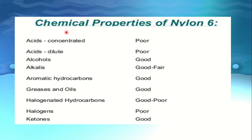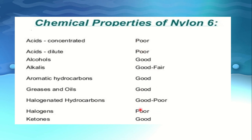Chemical properties of nylon 6: resistance to concentrated acids — poor; dilute acids — poor; alcohols — good; alkalies — fair; aromatic hydrocarbons — good; greases and oils — good; halogenated hydrocarbons — good to poor; halogens — poor; ketones — good. These are the chemical reactivity properties of nylon 6.